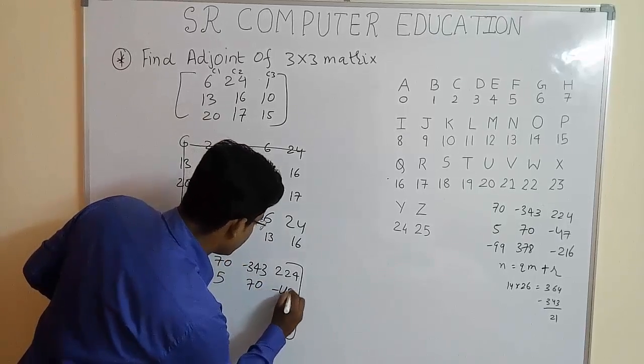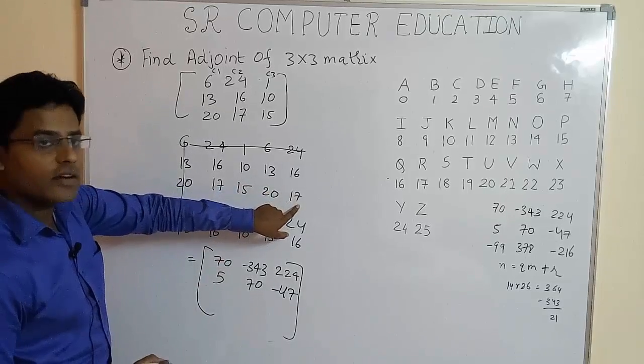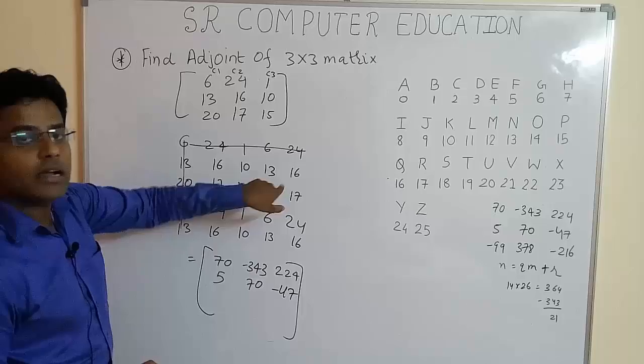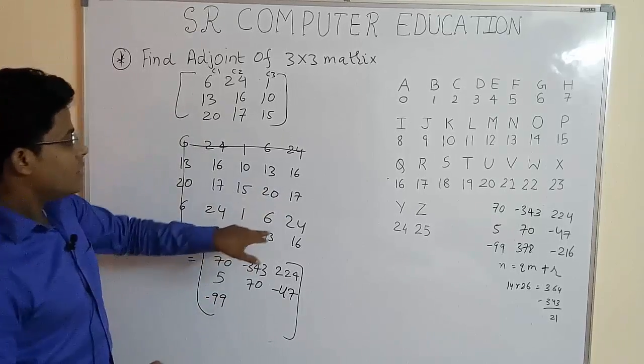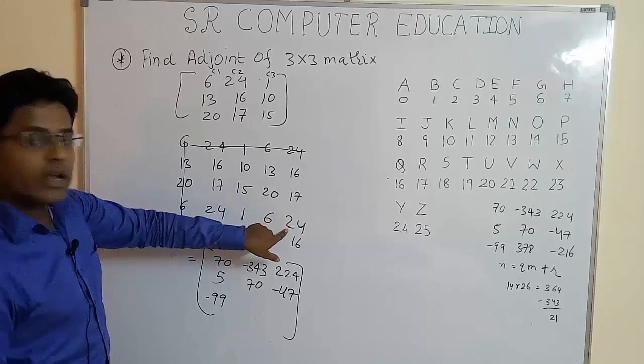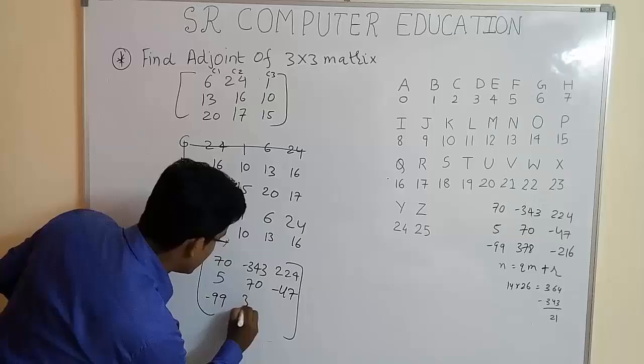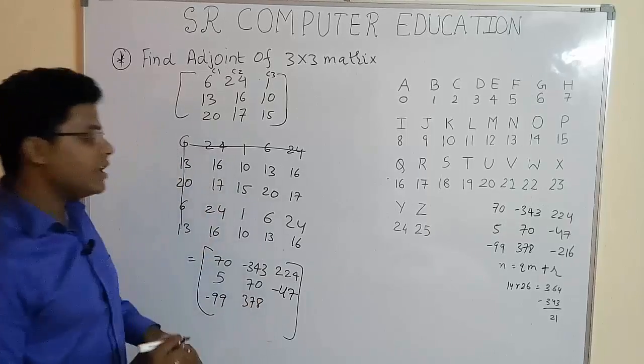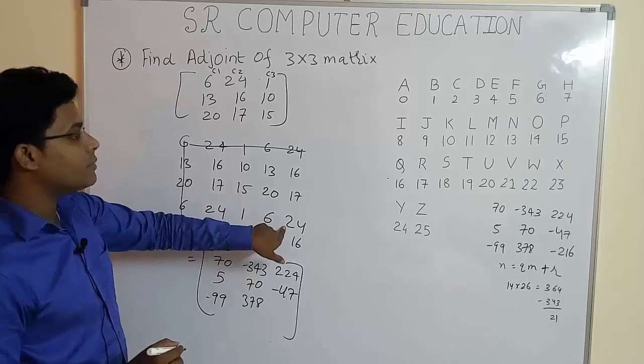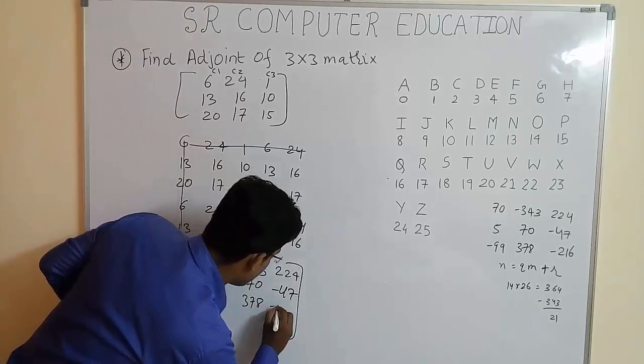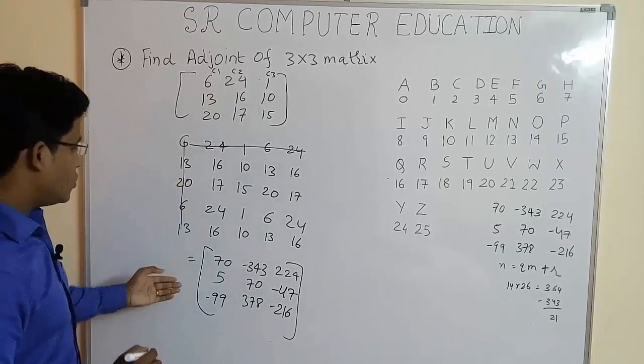Similarly, 13 multiply by 17 minus 20 multiply by 16. You get minus 99. 20 multiply by 24 minus 6 multiply by 17. You get 378. And finally, 6 multiply by 16 minus 13 multiply by 24. You get minus 216.